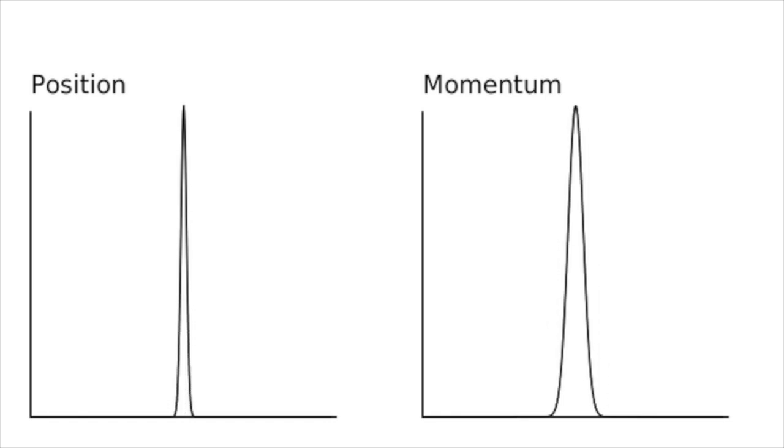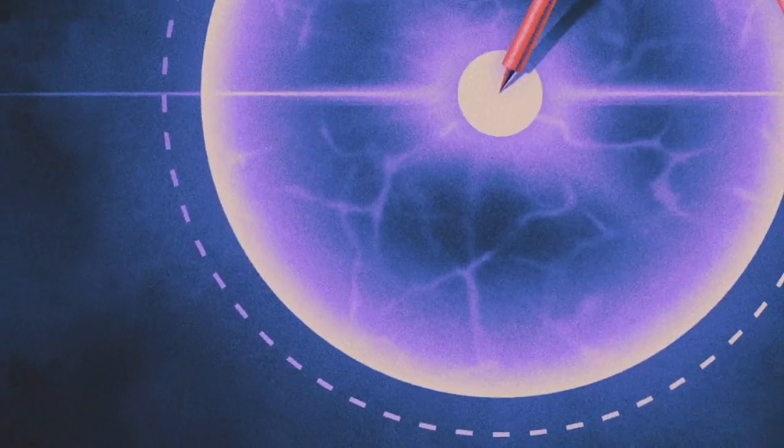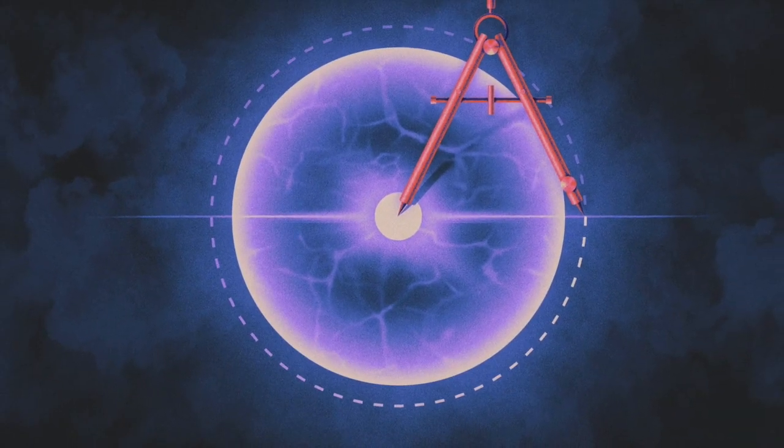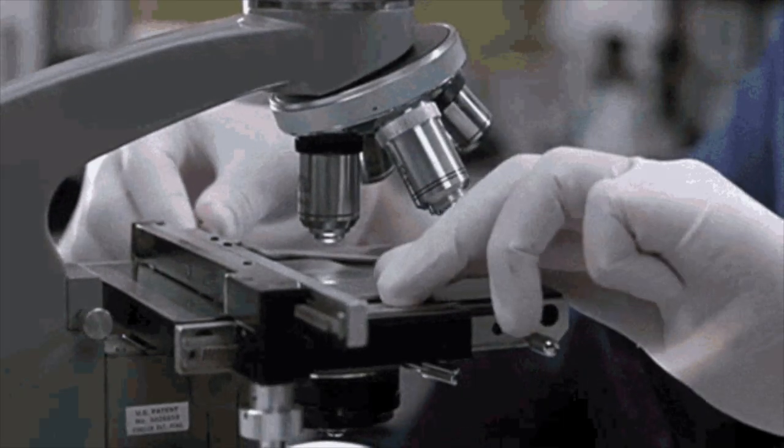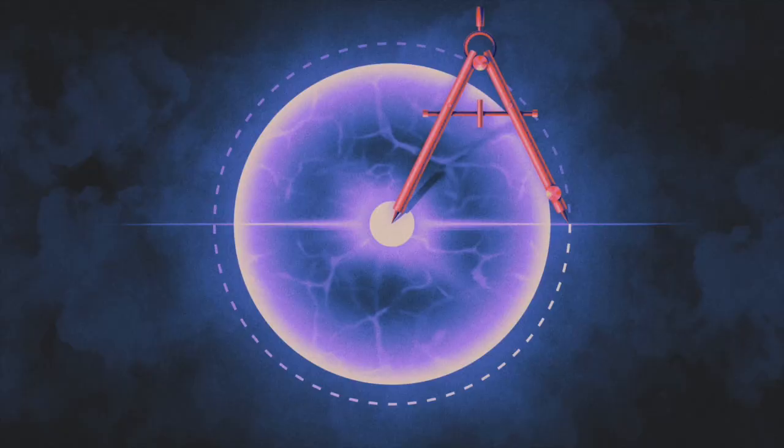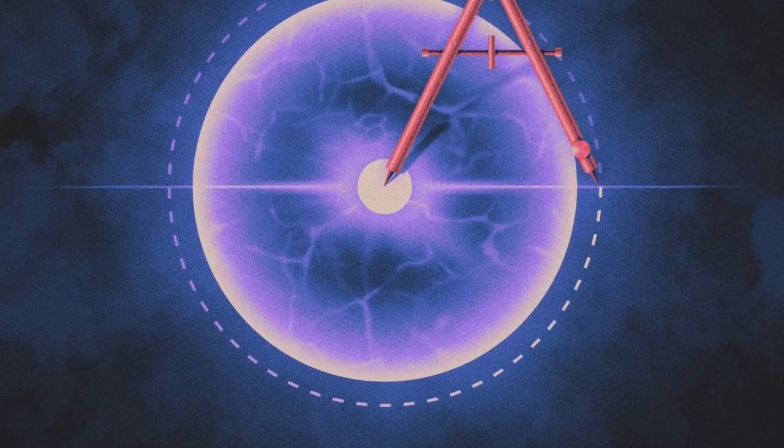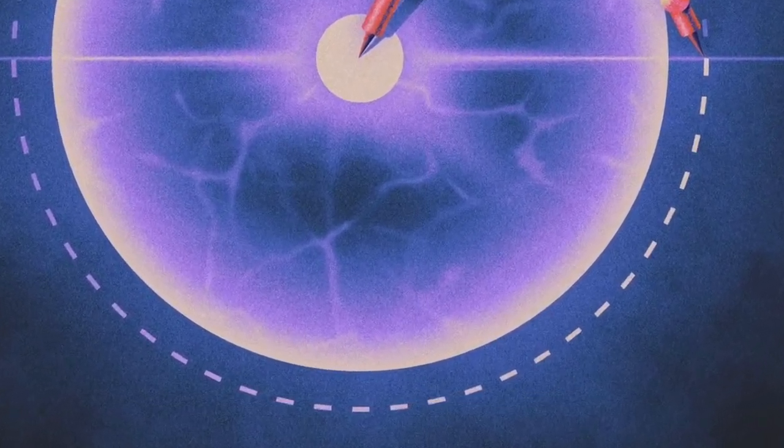Let's break it down. Imagine we have a particle, like an electron, and we want to measure its position accurately. We use a highly precise instrument, such as a microscope, to determine its location. However, as we zoom in closer and closer, the very act of measurement affects the particle's momentum. The more precisely we try to measure its position, the less accurately we can know its momentum.